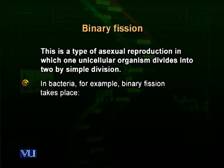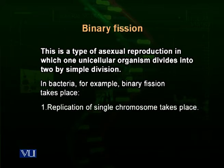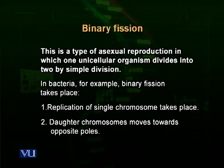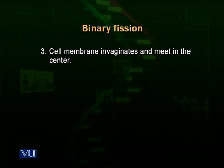In bacteria, binary fission takes place in steps. Step one: replication of the single chromosome takes place. In bacteria there is only one chromosome; that chromosome undergoes replication — in other words duplication — it divides into two. If the cell has plasmids, the plasmids also divide into two. Then this chromosome and the plasmids move towards the sides of the cell. When they reach the sides, the cell membrane starts invaginating from the center inward, and membranes from both sides meet almost in the center.